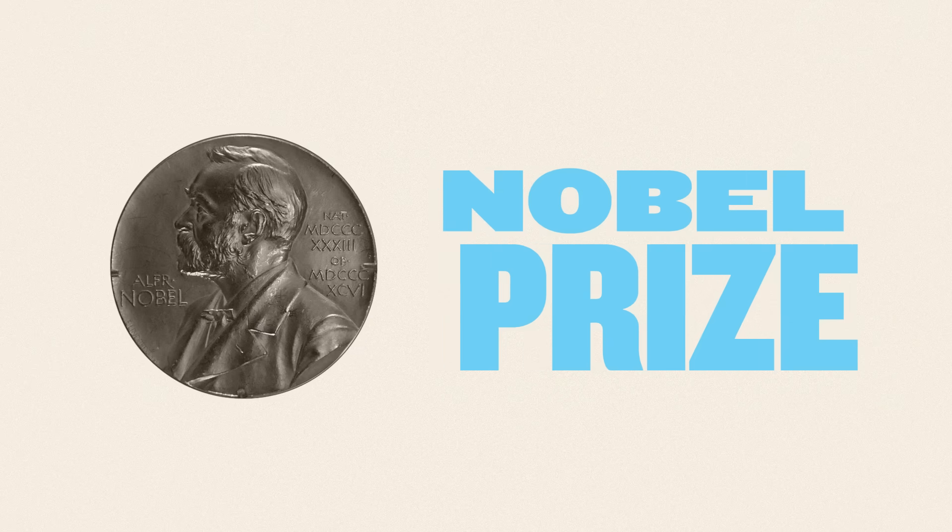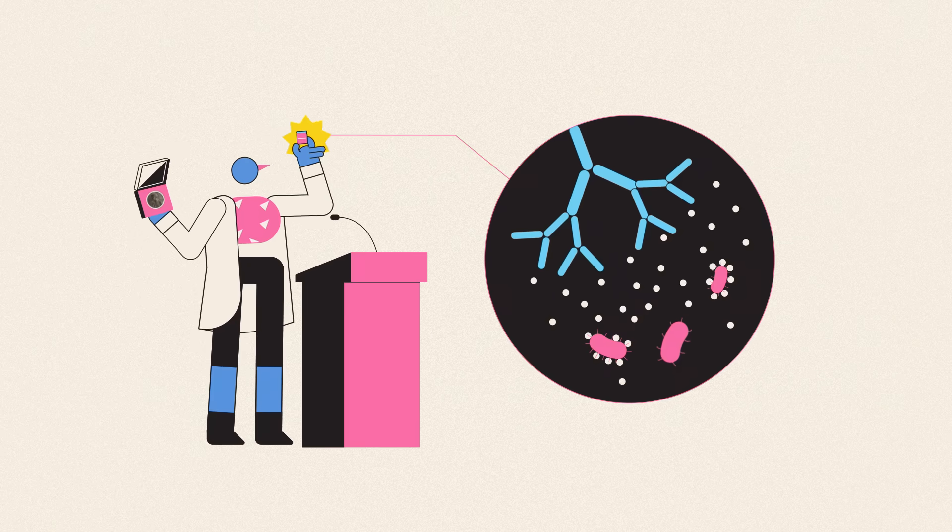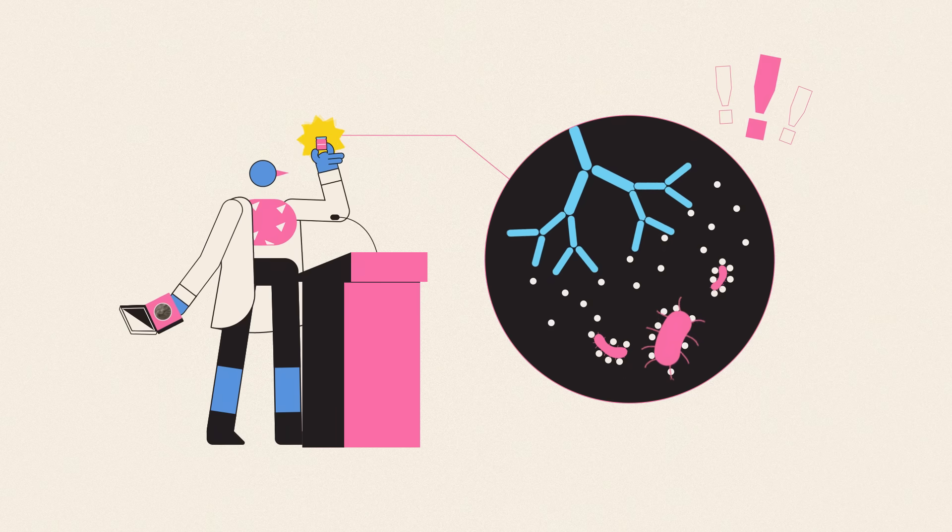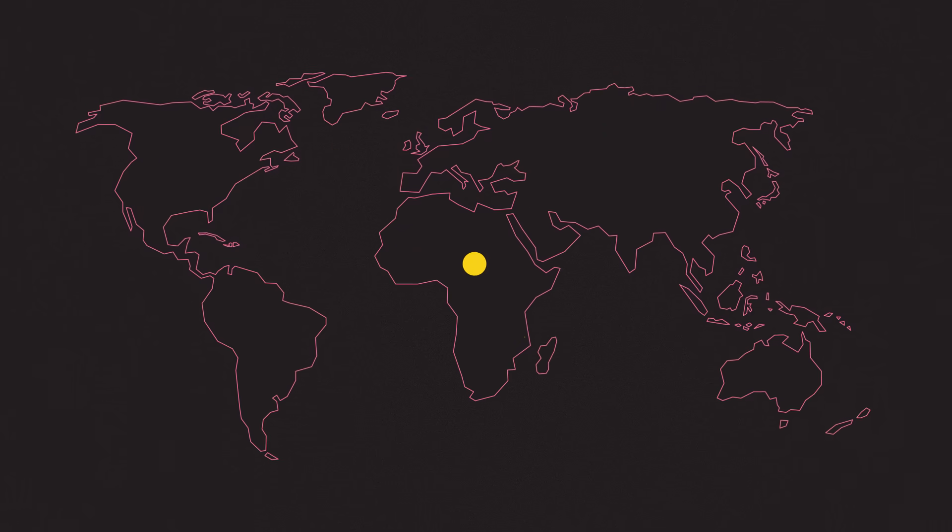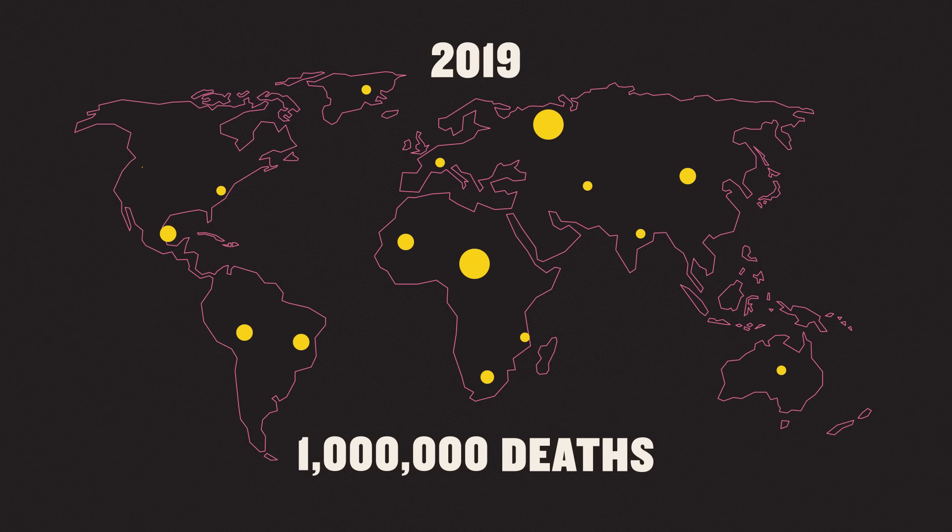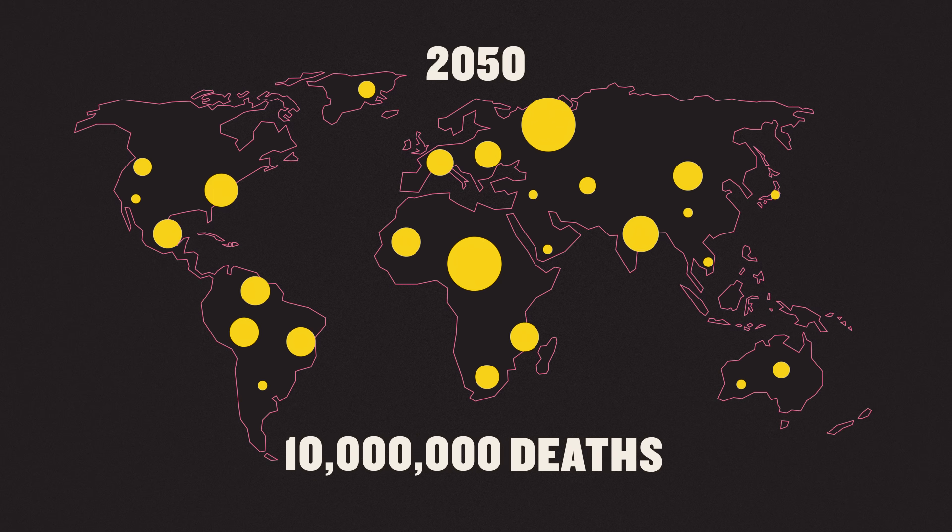But when he received the Nobel Prize, Fleming warned that bacteria can become immune to antibiotics, potentially returning us to an era when many diseases are untreatable. Already, his prediction is coming true, with over a million lives lost to antibiotic-resistant diseases in 2019, a figure expected to rise to 10 million a year by 2050.